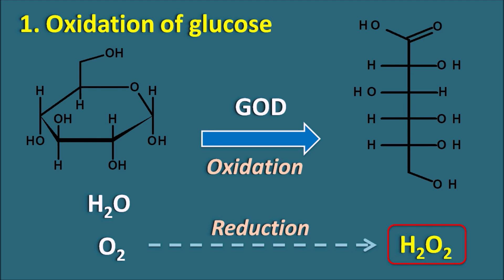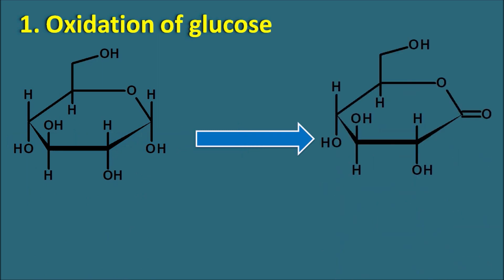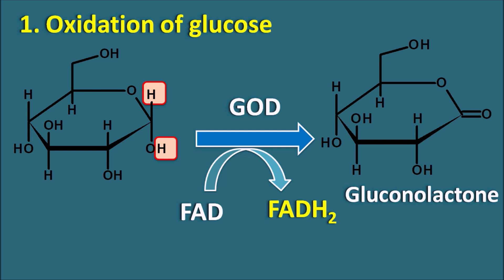By estimating hydrogen peroxide levels, we can estimate the glucose levels in the sample. Glucose is first oxidized to a lactone form called gluconolactone, and this step is mediated by the enzyme GOD — glucose oxidase. In this step, the hydrogens attached at the first position of glucose are removed, causing oxidation. Glucose oxidase enzyme has a cofactor FAD, which carries these hydrogens and is converted to FADH2. So glucose is converted to gluconolactone with hydrogens removed from the first position. Gluconolactone is unstable in the presence of water and easily undergoes hydrolysis to produce gluconic acid.